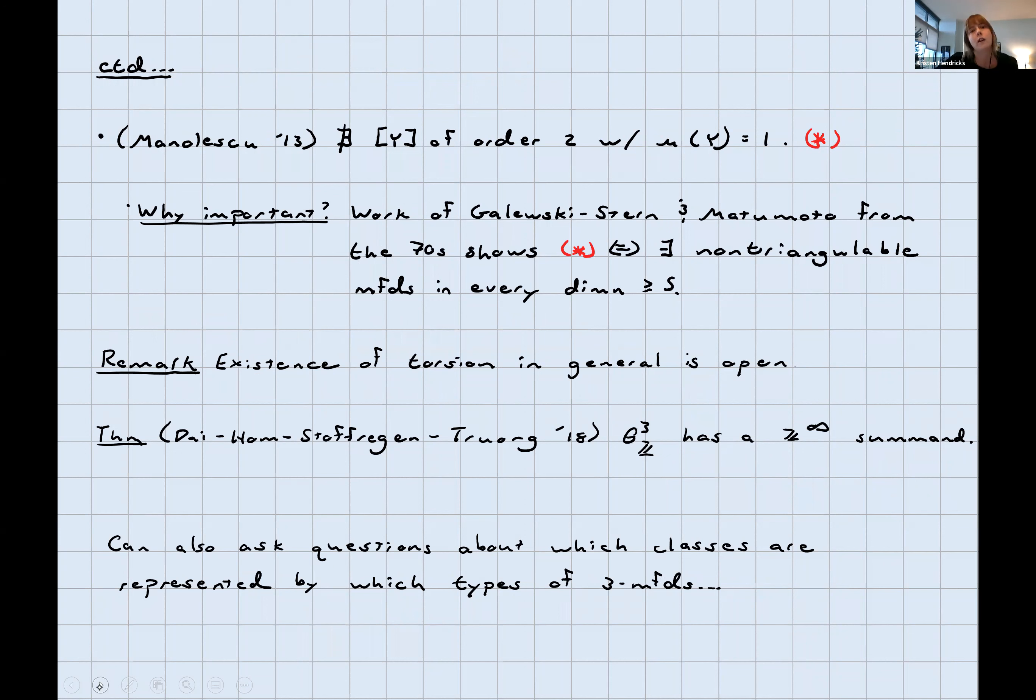The big development that informs most of the work in the rest of this talk: In 2013, Ciprian Manolescu showed that there's no Y of order 2 in the homology cobordism group with Rochlin invariant 1. Why was that important? Work of Galewski-Stern and Matumoto from the 70s showed previously that that statement was equivalent to there existing non-triangulable topological manifolds in every dimension greater than or equal to 5. What do those words mean? Triangulation is a homeomorphism to the geometric realization of a simplicial complex. Every smooth manifold is triangulable by work of Cairns and Whitehead, which means everything up through dimension 3 is triangulable. In the late 80s, Casson showed that Freedman's E8 manifold in dimension 4 is not triangulable. Topological manifolds in higher dimensions were open until this work of Ciprian's.